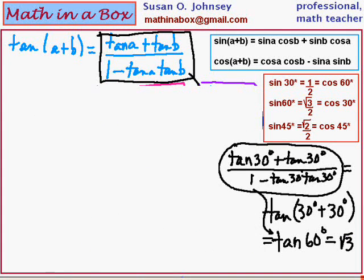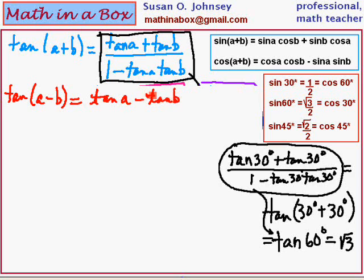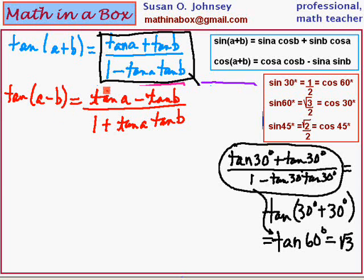I want to give you one more formula or identity — the tangent of a difference. The tangent of A minus B is very similar to the other one: we have the tangent of A minus the tangent of B, divided by 1 plus the tangent of A times the tangent of B. This is the tangent of a difference — remember the word difference means subtraction, two angles being subtracted. This is the identity that you can use.